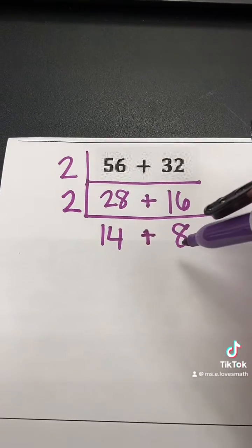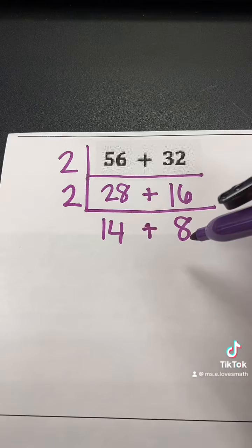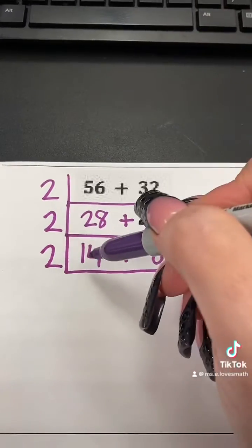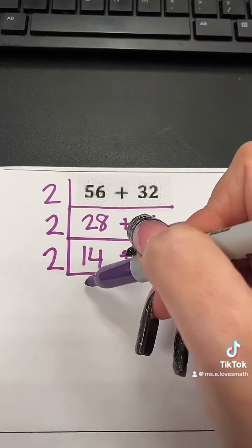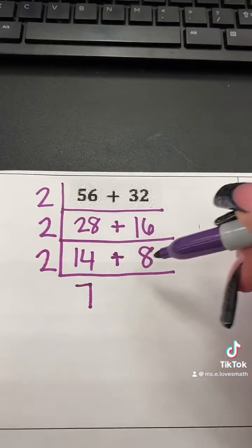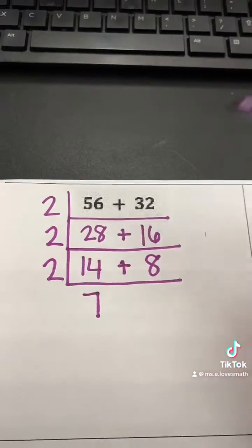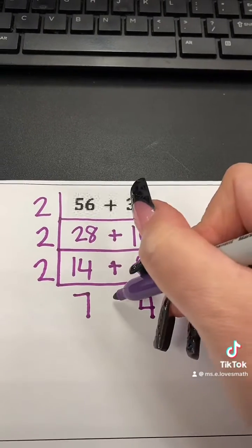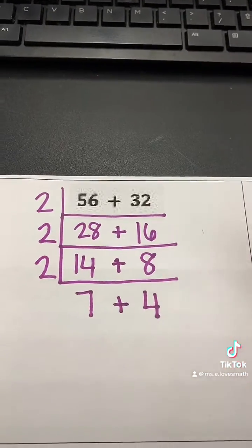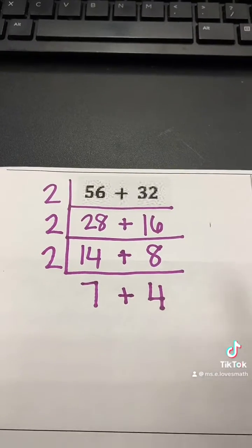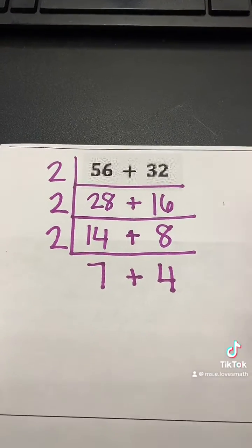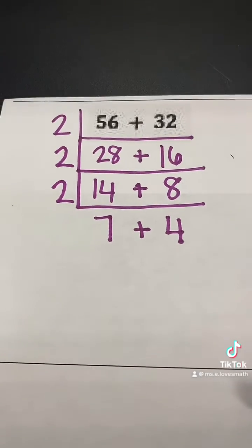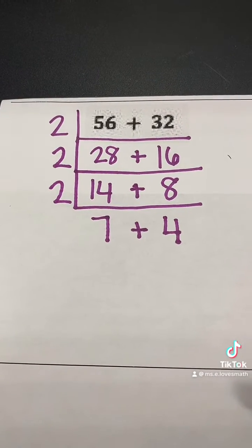They're both even again, so I can use 2 again. So building my ladder, I put my 2 here. 14 divided by 2 is 7. 8 divided by 2 is 4. Bring down my plus sign. 7 and 4 do not have any factors in common, so we are done building our ladder. Now we need to find the GCF.